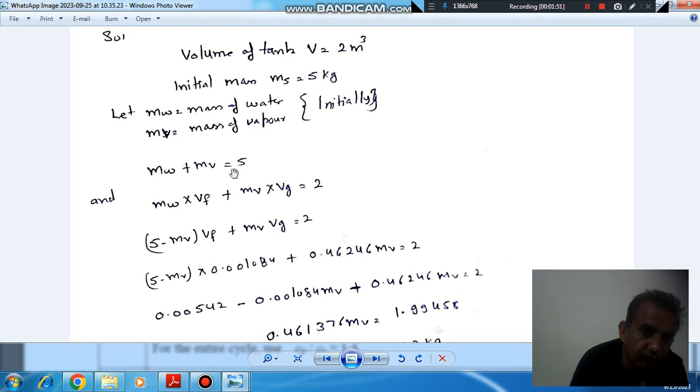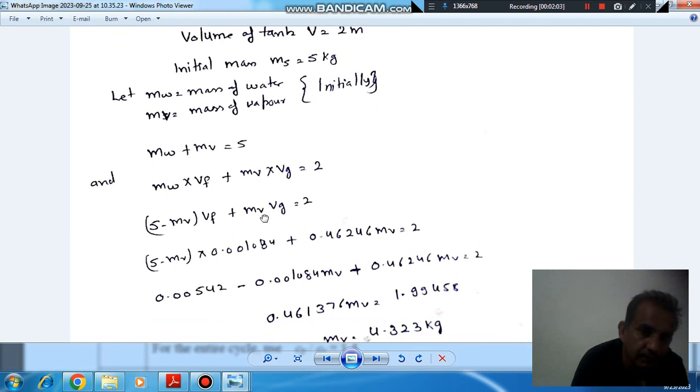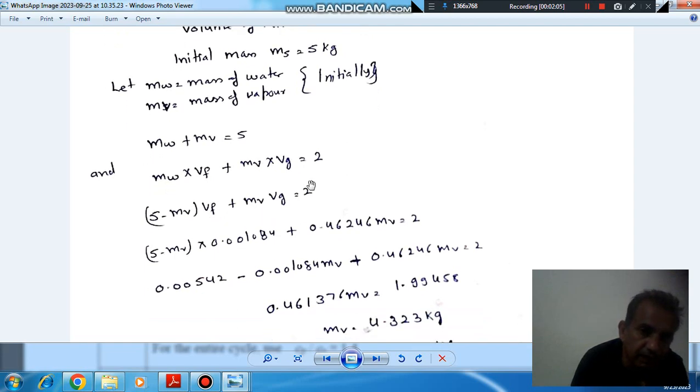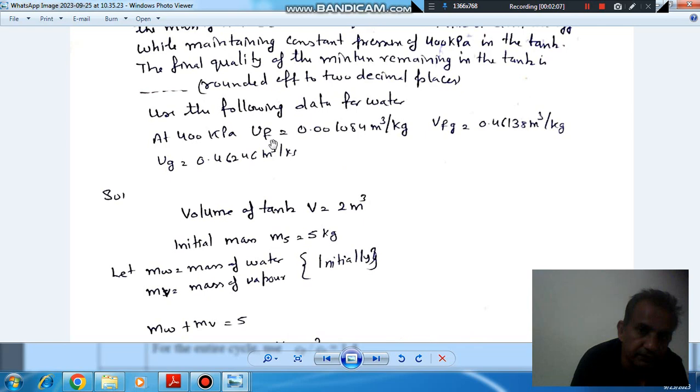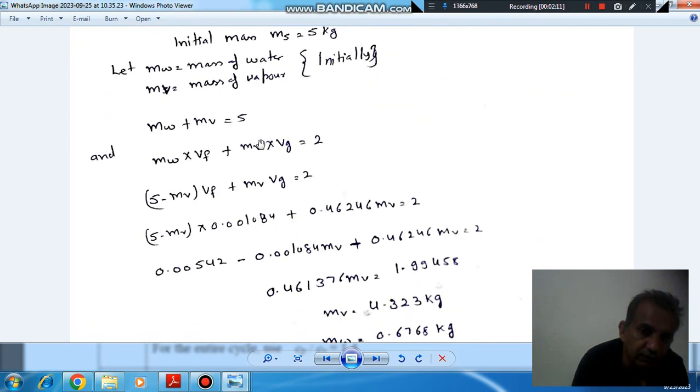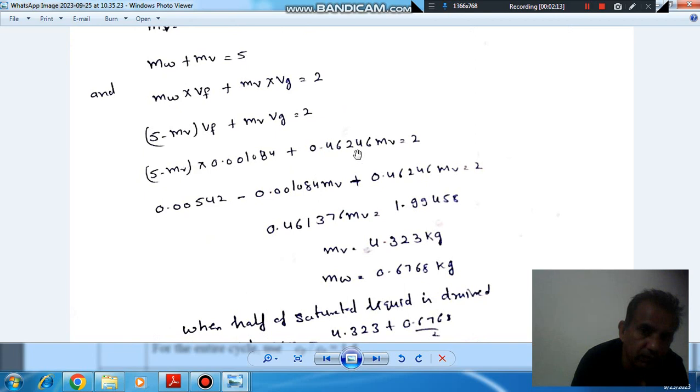So MWV is 5 minus MW. Now VF is given and VG is given. These are the given data, VF and VG. So putting these values, we have only one unknown that is MW.